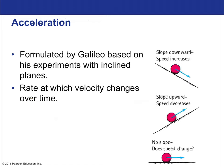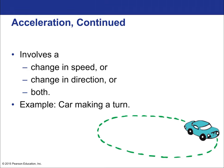Acceleration, formulated by Galileo back in the 1500s based on his experiments with inclined planes, is the rate at which velocity changes over time. If velocity is the rate at which displacement changes over time, then acceleration is the rate at which velocity changes over time. Acceleration can involve a change in speed, a change in direction, or both.